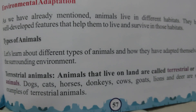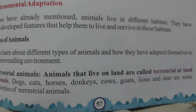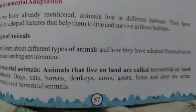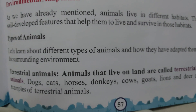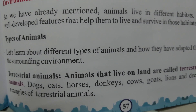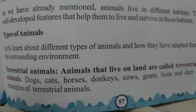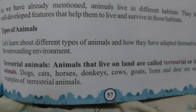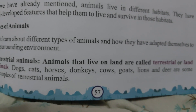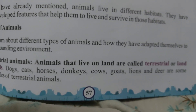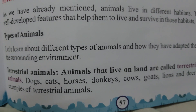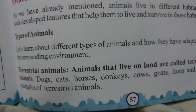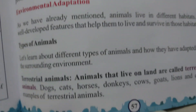Terrestrial animals. Animals that live on land are called terrestrial animals. Dogs, cats, horses, donkeys, cows, goats, and lions are some examples of terrestrial animals.